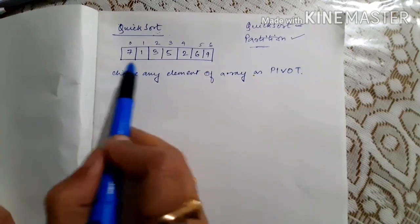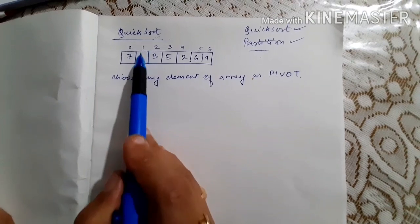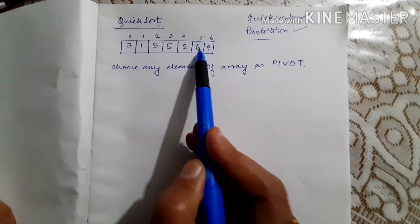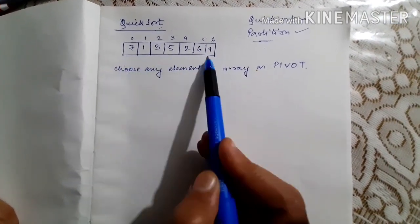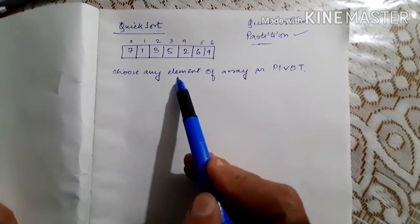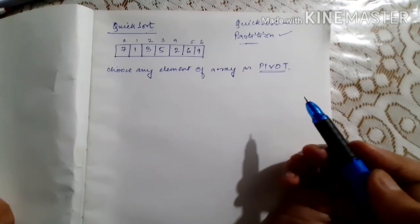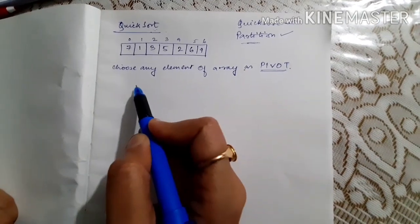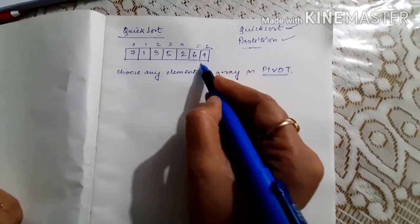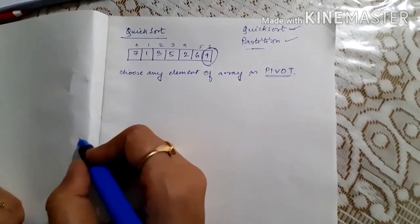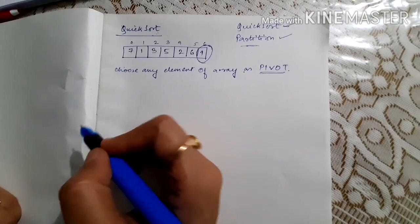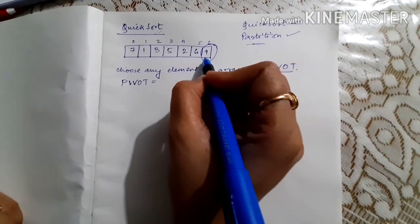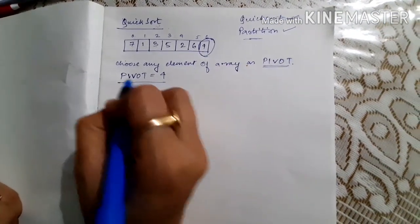Suppose this is our array: at index 0 — 7, index 1 — 1, index 2 — 3, index 3 — 5, then 4, 2, 5, 6, and 4. Now in this array we need to choose any element called the pivot element. By tradition, if we always choose the last element of the array as the pivot element, our algorithm is convenient to implement. So here we choose element 4 at the last index as our pivot element.